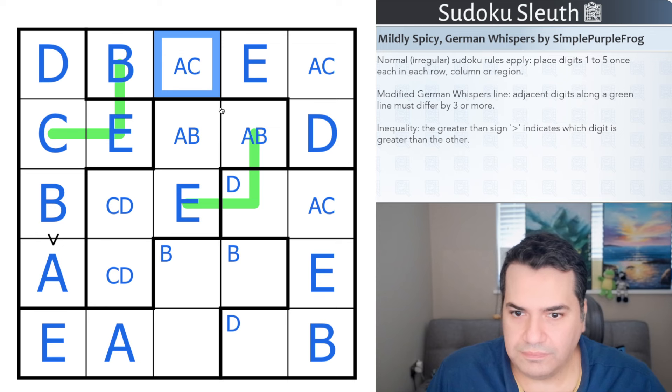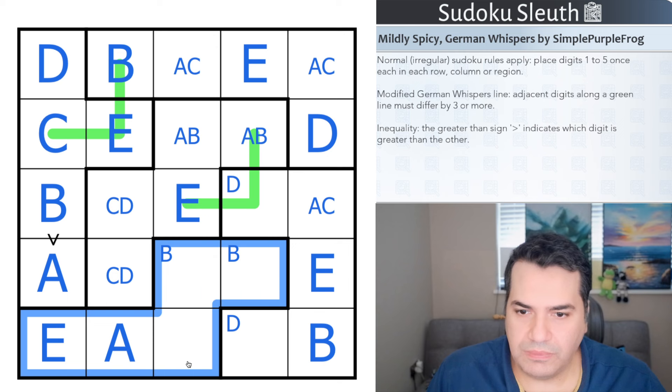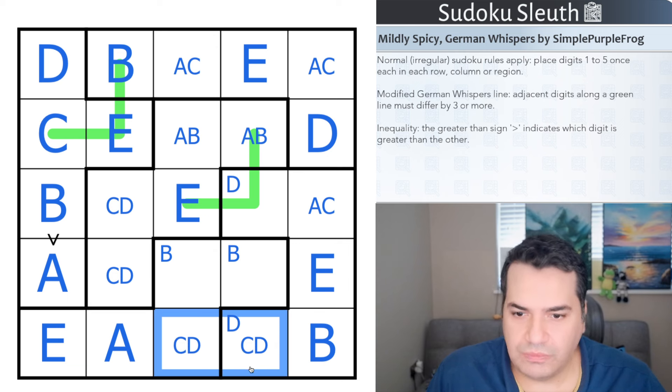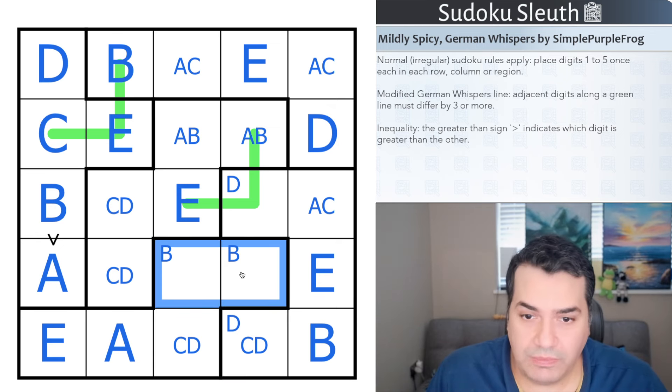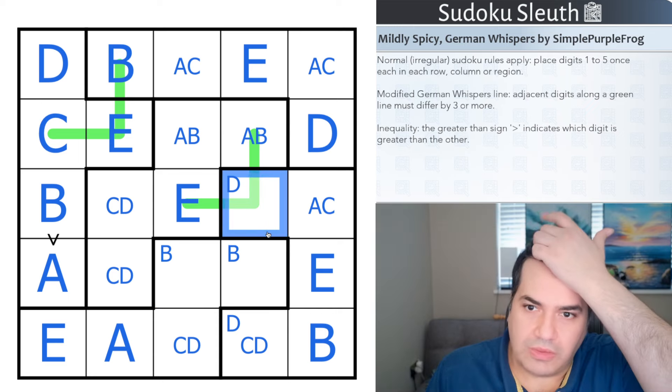Need A and C. Don't know how much further I can push this without really thinking about the German whispers for a moment. So in here, to complete this row, it is C and D. Essentially we've got the same thing in here—C and D—but one of them has to be a B and I don't know what this is.